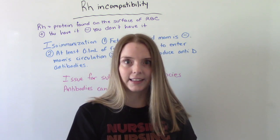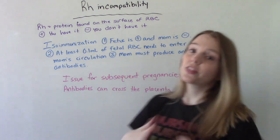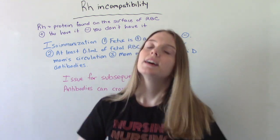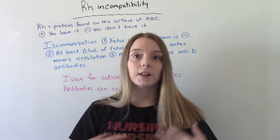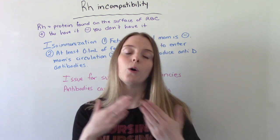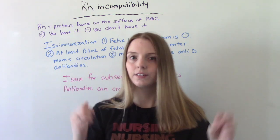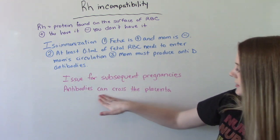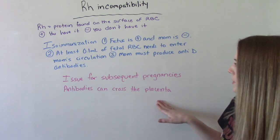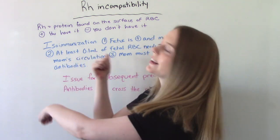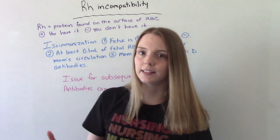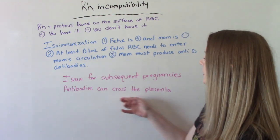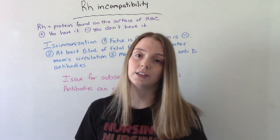Think of it as a reaction like that. In the first pregnancy, nothing happens — she produces the antibodies but nothing happens to the baby. In subsequent pregnancies, mom's body will attack the baby's body because it doesn't match and it looks foreign. Antibodies can cross the placenta, and in subsequent pregnancies she already has those antibodies, which can cross the placenta and cause harm and even fetal death.